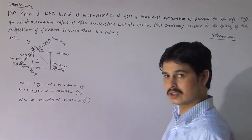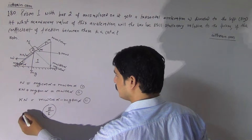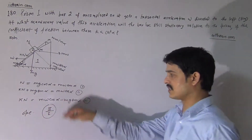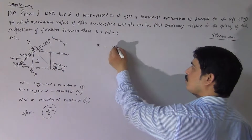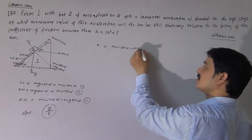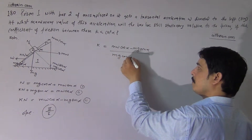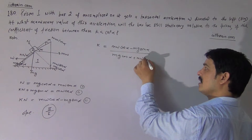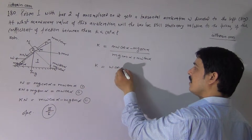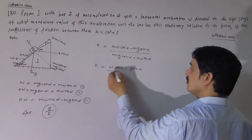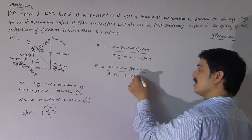Now dividing the second equation by the first — that is, performing operation second divided by first — we get: K = (W·cos(alpha) − G·sin(alpha)) / (G·cos(alpha) + W·sin(alpha)).